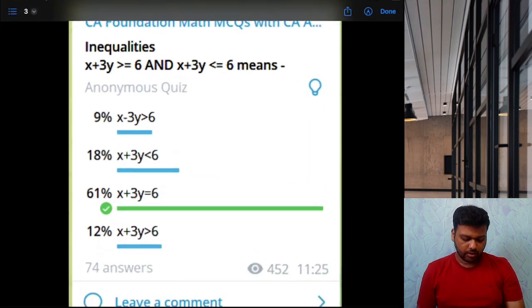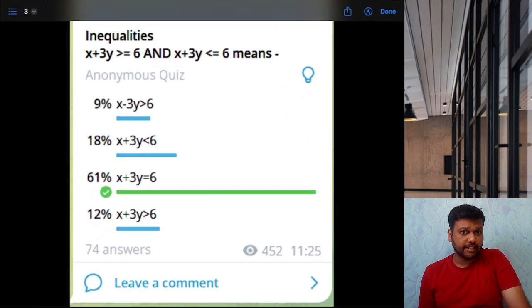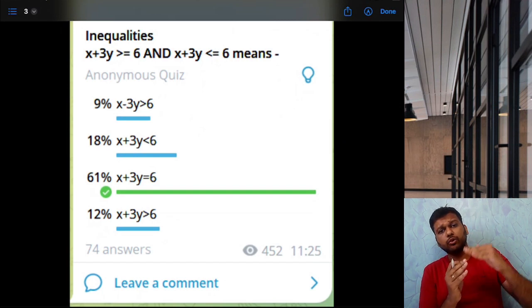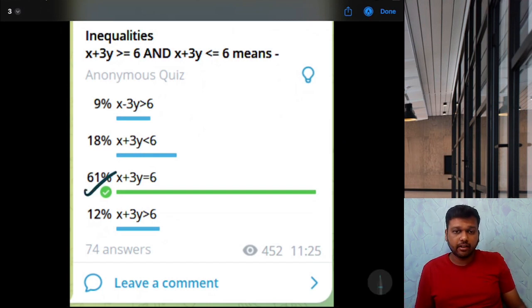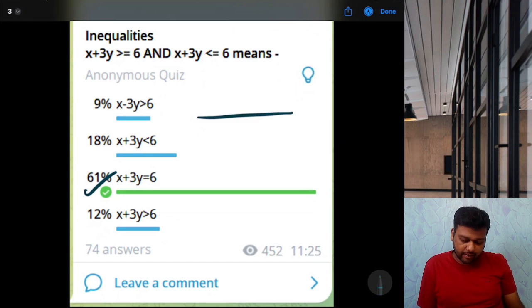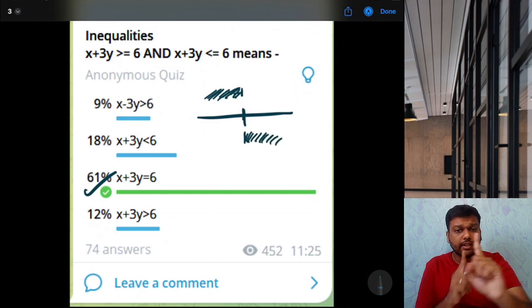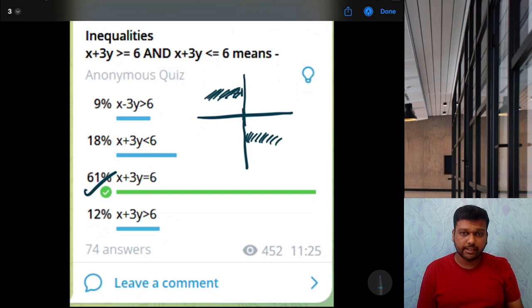Last two. X plus 3Y is greater than or equal to 6 and X plus 3Y is less than or equal to 6. It means what? If something is greater than or equal to 6 and less than or equal to 6 also, that means it has to be equal to 6. Because think on a number line. If something is 6 or less, and it is also 6 or more. Then there is only one common point which is 6. So, is equal to 6 is the correct answer.